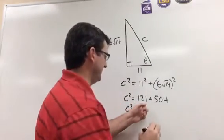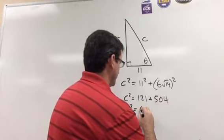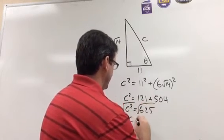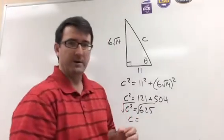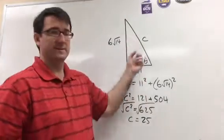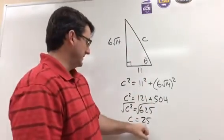Take the square root of both of those, we get C is equal to plus or minus 25. But of course we know that this length isn't negative 25, so C is 25.